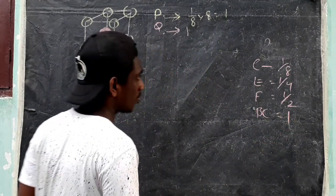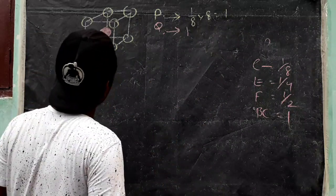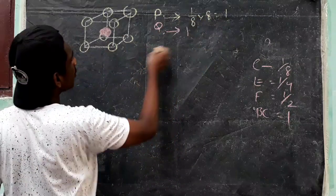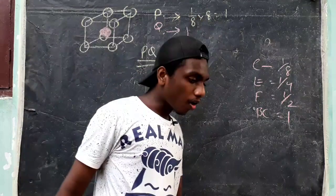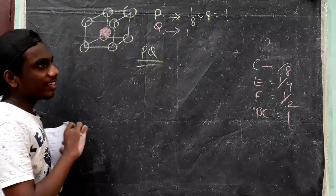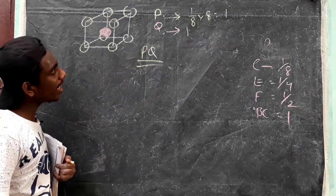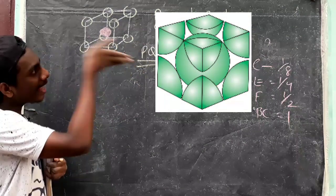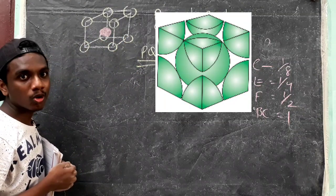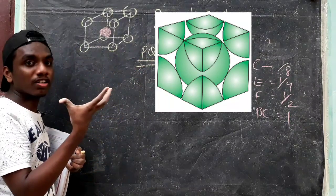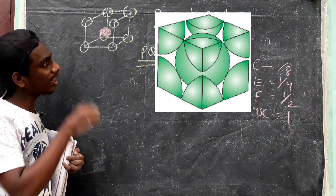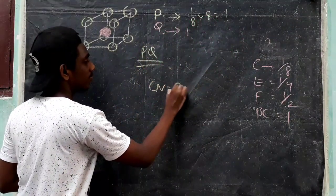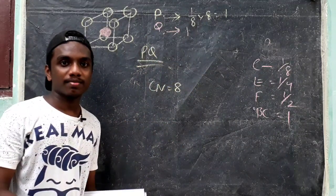The body center gives 1 P, so the formula is P₁Q₁, which is simply PQ. Now, what is the coordination number? The body center atom P can contact the 8 corner atoms, so the coordination number is 8.